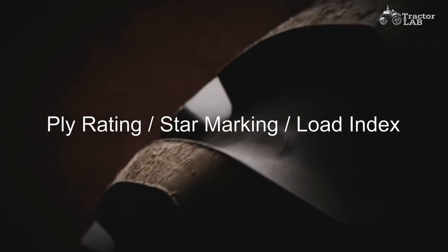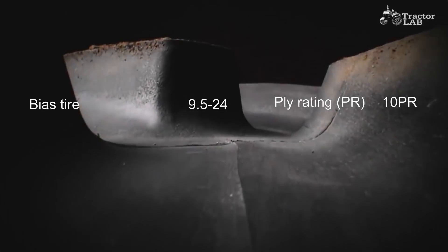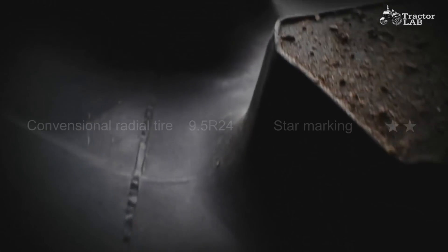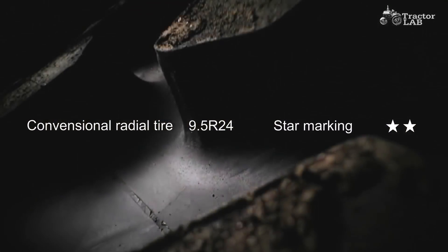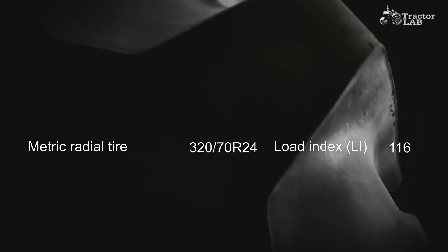Ply rating, star marking, load index. The load and pressure capacity of a tire is shown in the ply rating for bias tires, the star marking for conventional radial tires, or the load index for metric radials.